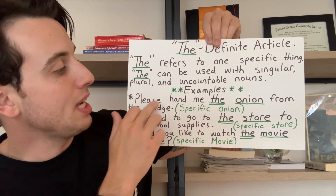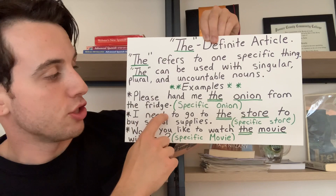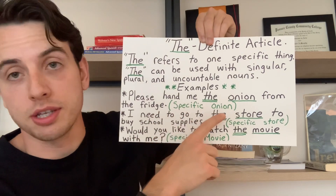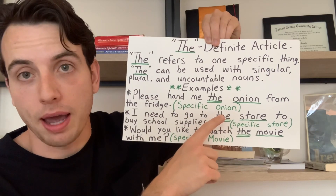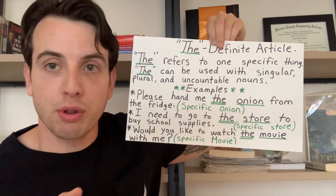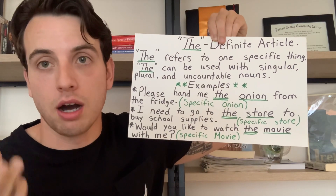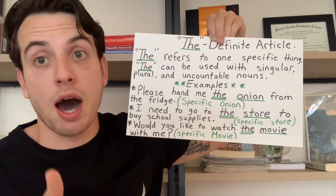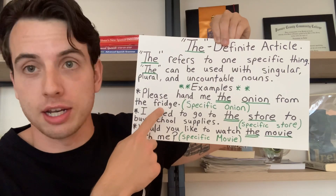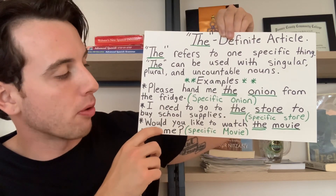Please hand me the onion from the fridge. That's a specific onion that we're speaking about. When you see the article 'the,' it implies that there is a specific onion in mind. So, which one? The one in the fridge.